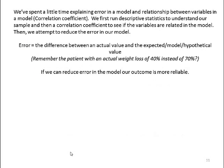So we've spent a little time explaining error in a model and the relationship between variables as measured by correlation coefficient. We first run descriptive statistics to understand our sample, then a correlation coefficient to see if our variables are related in a model, and then we attempt to reduce error in our model. Error is the difference between an actual value and the expected value — remember that patient with an actual weight loss of 40 instead of 70%? If we can reduce error in our model, then our outcomes are much more reliable.